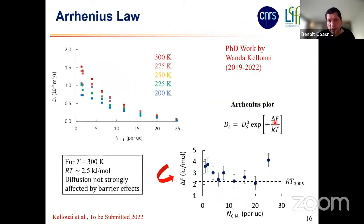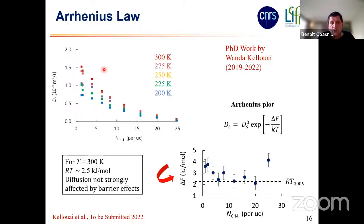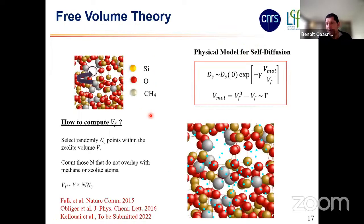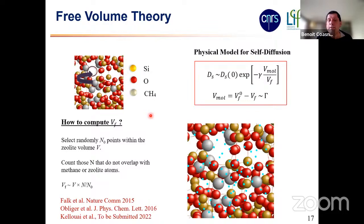There's one thing we haven't explained, which is in my view the most interesting part: the simple decay in self-diffusivity as we increase the adsorbed amount. We tried different models, and one that works quite well is the free volume theory. It was written more than 50 years ago, actually for diffusion in glasses and polymers, but we found it works quite well. The idea is simple: you need around a methane molecule a cavity that is large enough for the molecule to jump into. It's a jump diffusion model that accounts for the free volume in the system.